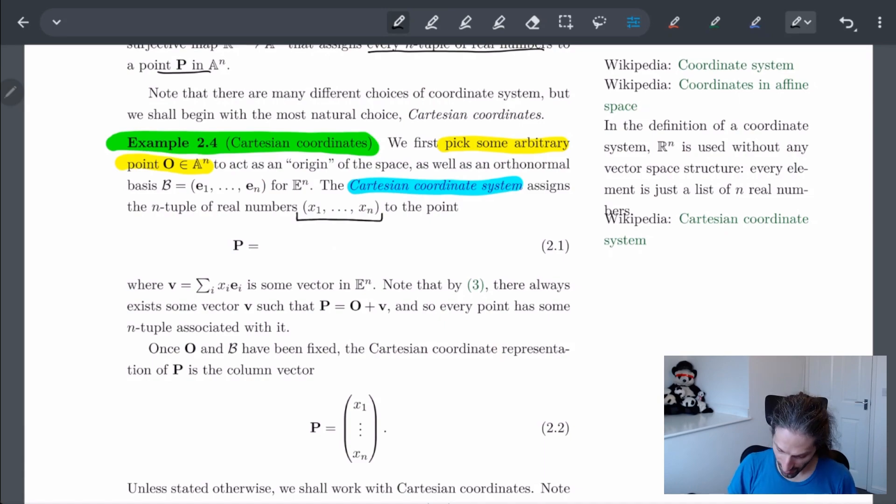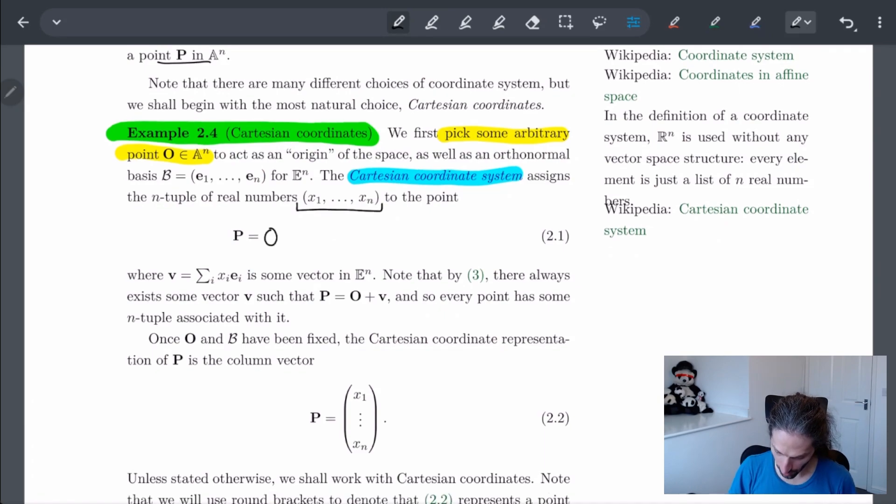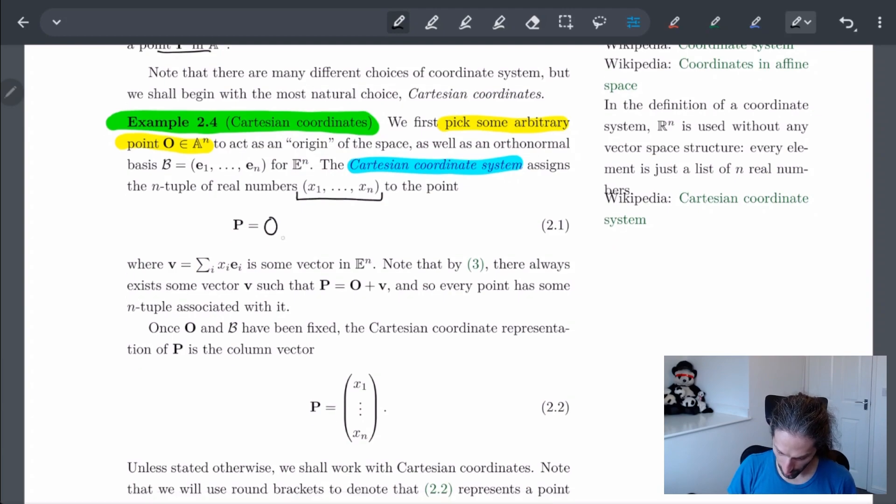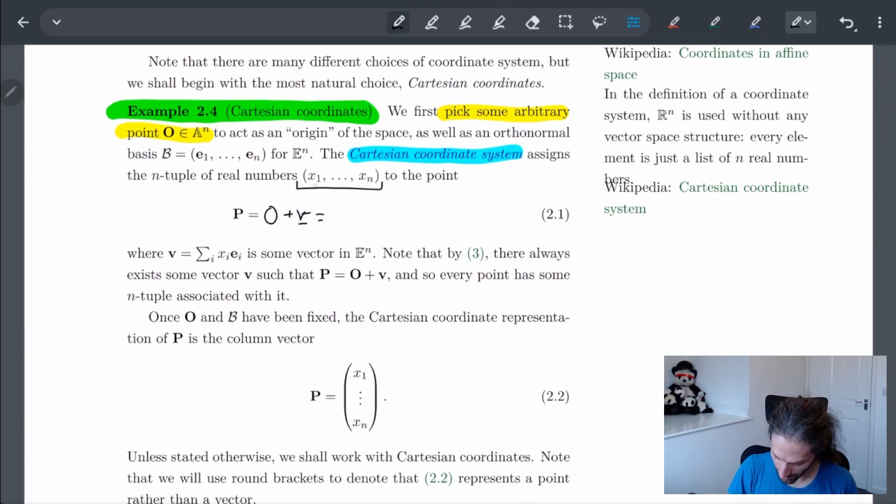This is precisely going to be O, the origin we have from here, plus the vector v, which is precisely given by—in essence you can consider this as our v.